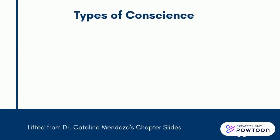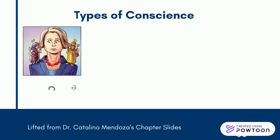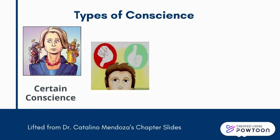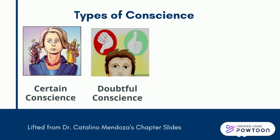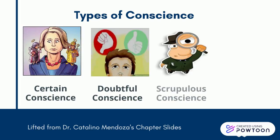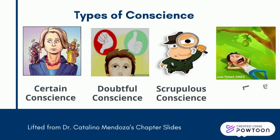Continuing on, certain conscience is a subjective certainty of the legality of actions, while doubtful conscience is when a person is not certain about a moral judgment. When you see wrong where there is none, it is called scrupulous conscience, and failing to see wrong where there is wrong is called lax conscience.